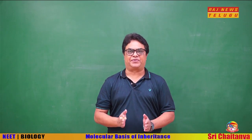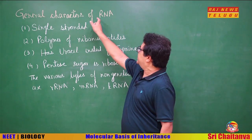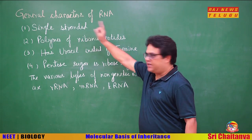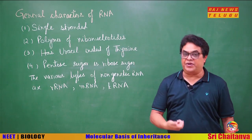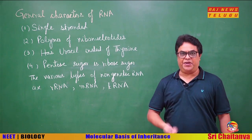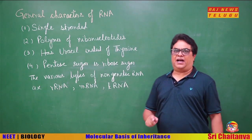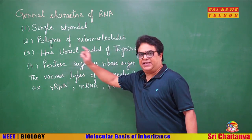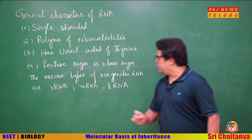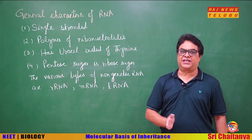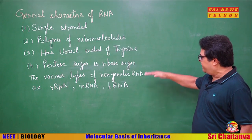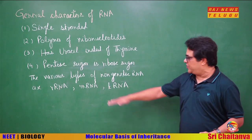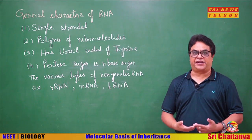The general characteristics of non-genetic RNA: it is single-stranded; it is a polymer of ribonucleotides, while DNA is a polymer of deoxyribonucleotides; the pyrimidine in RNA is uracil in place of thymine; and the pentose sugar is ribose, while in DNA it is deoxyribose. The main types of non-genetic RNA are rRNA, mRNA, and tRNA, and all three participate in translation or protein synthesis.